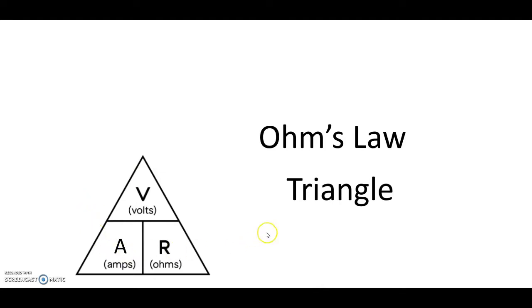Now in the classroom, when I've referred to the Ohm's law triangle, I've encouraged you to use the initials V for volts, A for amps, R for resistance, which is measured in ohms. So the initials are V, A, R, just because that's fairly easy to remember.